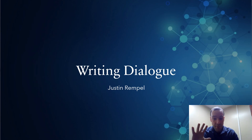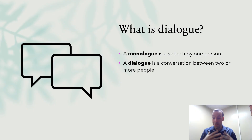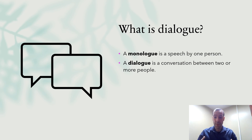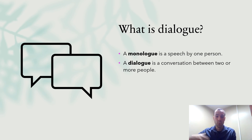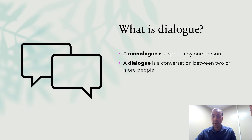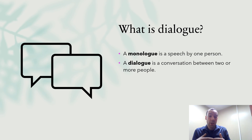Welcome! My name is Justin Rempel and we are going to be talking about writing dialogue. The first thing we need to figure out is what we mean when we say dialogue. Dialogue is when people or characters talk to each other. Monologue is when just one person is talking — a speech to themselves, the audience, or out into the open air. Today we focus on dialogue, which is a conversation between two or more characters.